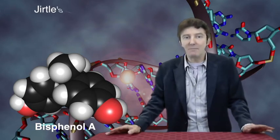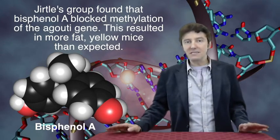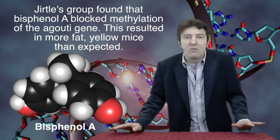Jirtle's group found that Bisphenol A blocked methylation of Agouti mice genes so that more of their progeny developed into the yellow obese mice than they'd expected.